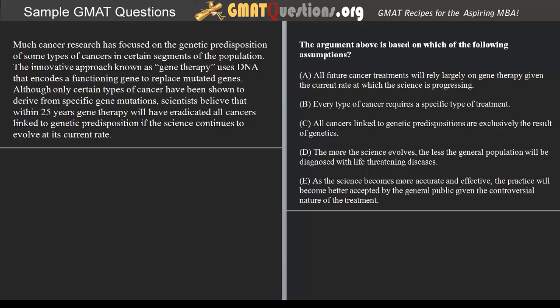Whenever we have an argument claim or conclusion being given in a passage and we're asked to identify a set of conditions that would logically correspond to the facts or set of conditions outlined in a passage, we're dealing with an argument construction type question. These types of questions require that we analyze an argument and provide a set of conditions that would logically correspond to that argument, demonstrating that we understand the logical construction of a line of argumentation.